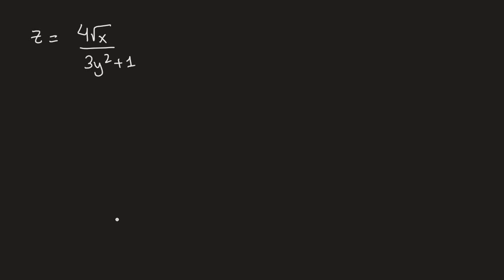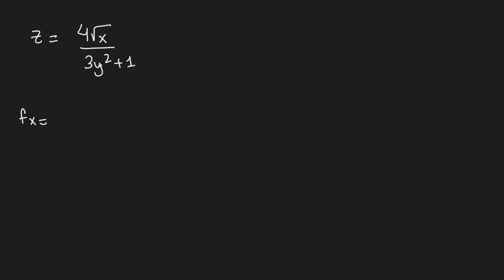Now let's move on to a different example. Here z equals 4 times the square root of x divided by (3y squared plus 1). Remember, z equals something is the same as f of x, y. We need to find the partial derivative of f with respect to x first, then with respect to y.